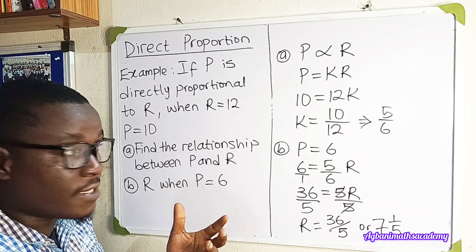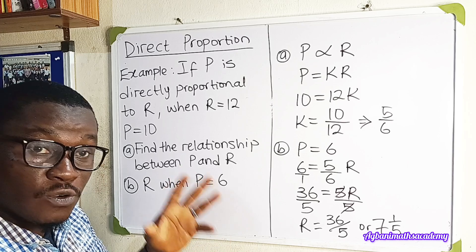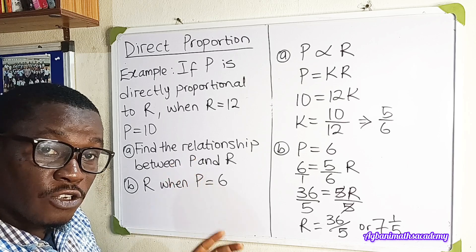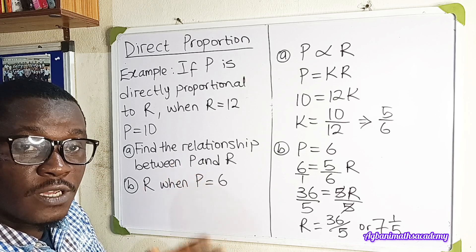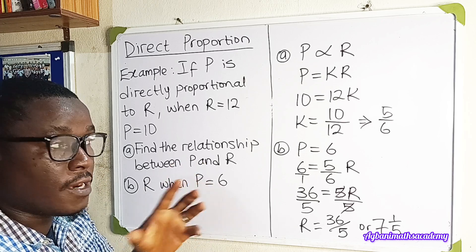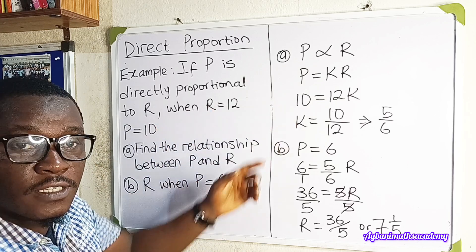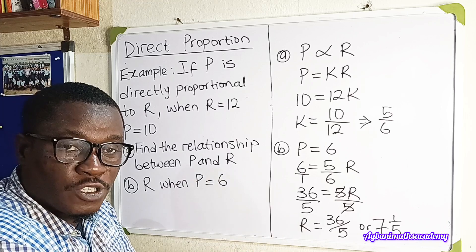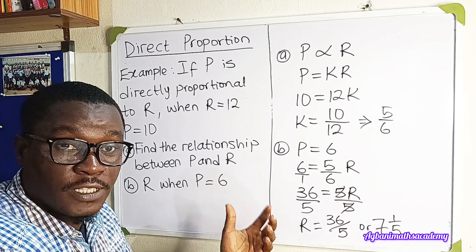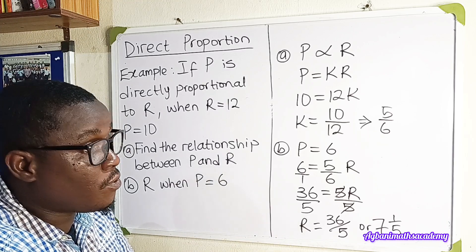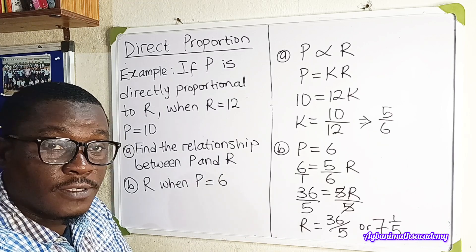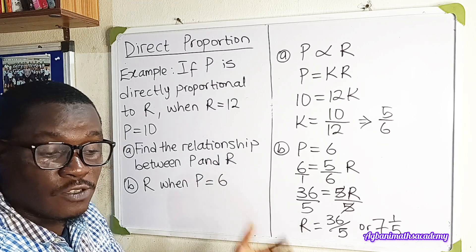We were able to find R because we know the relationship between P and R — the constant of proportionality. This is a simple example of direct proportion. Let's look at the second example before the assignment for this lesson.